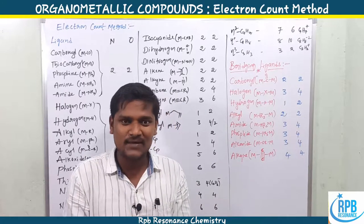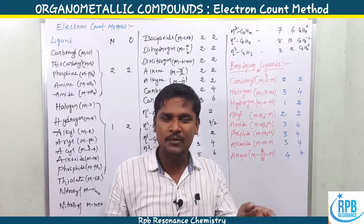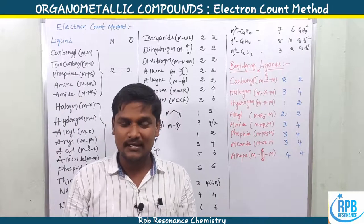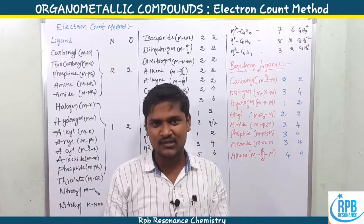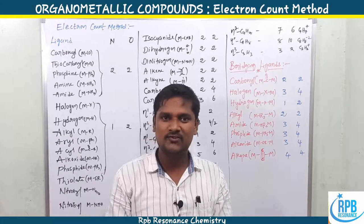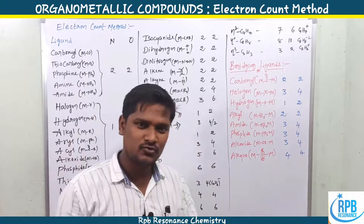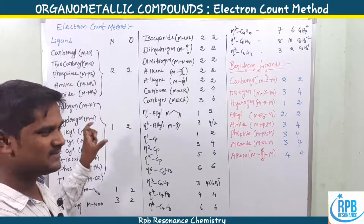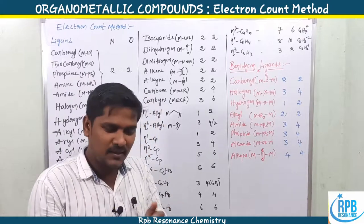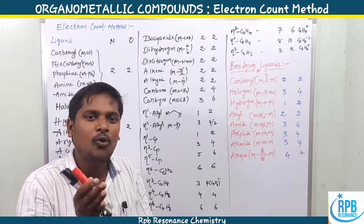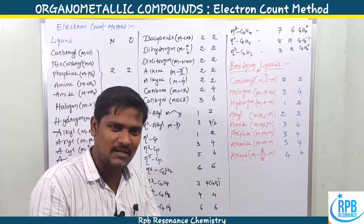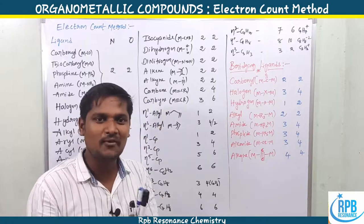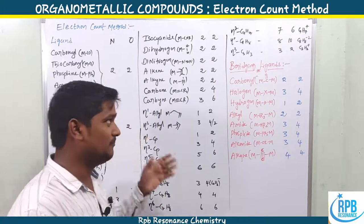The third application is that the electron count method determines whether a ligand is a terminal one or a bridged one. Not only terminal versus bridged, but also in the case of nitrosyls, whether it is a linear or bent structure. These are the main applications of the electron count method — it tells us how many electrons a ligand contributes to the central metal atom.